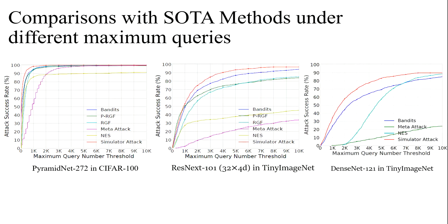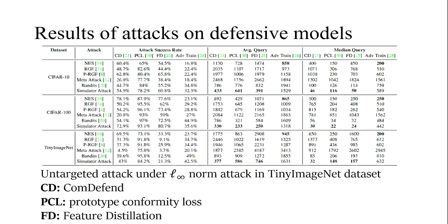We limit different query numbers to see the success rate. We can see our attack is the red line, which achieves the highest success rate at different query numbers.